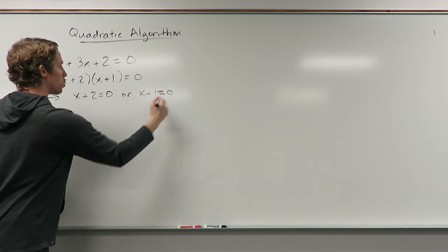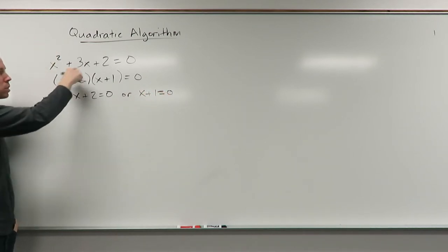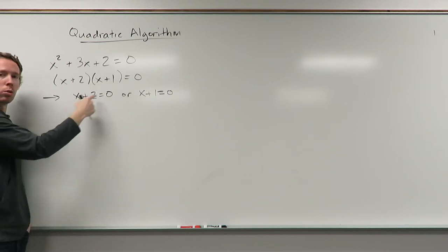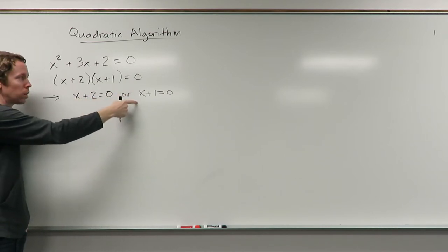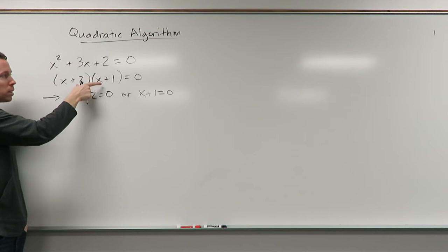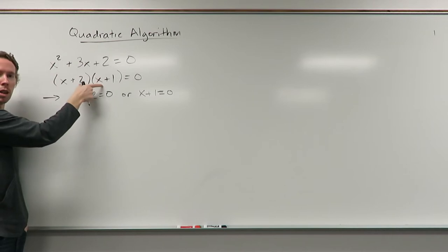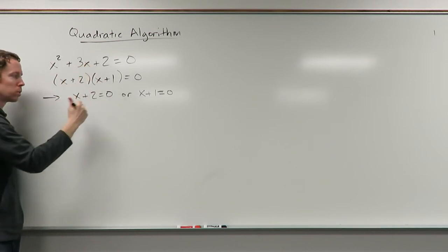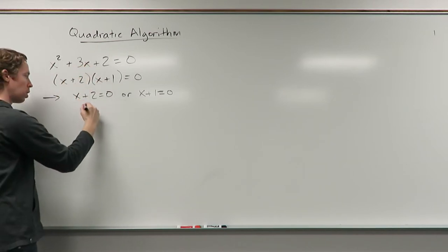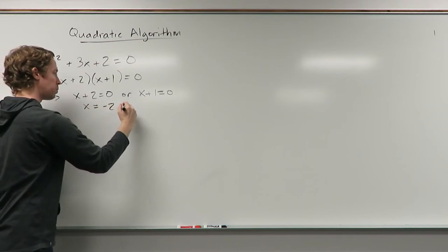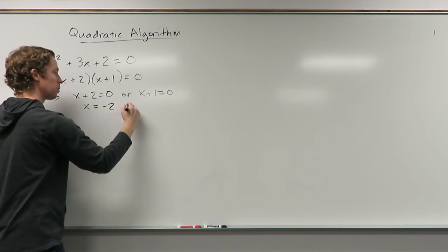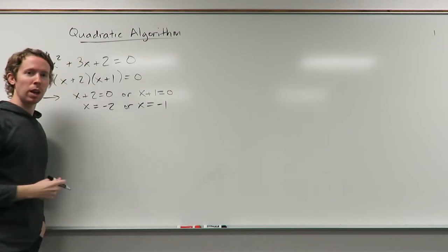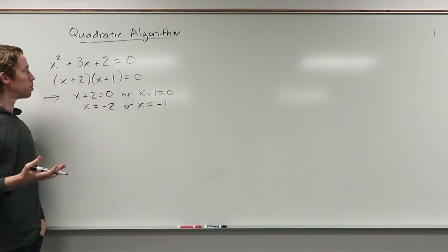Remember, we're looking for all the x's that make this equation true. So if an equation makes this true or this true, then it definitely makes this multiplication 0, which makes this top line true. So now just solve for x of both of these. And those are the two solutions to that problem.